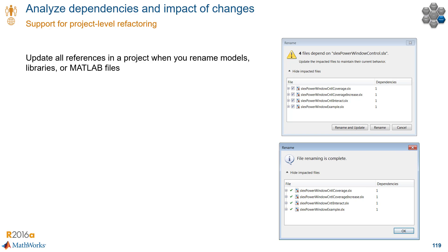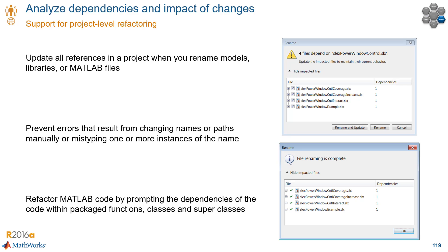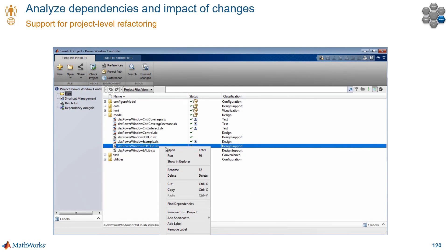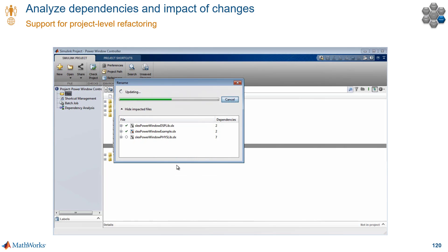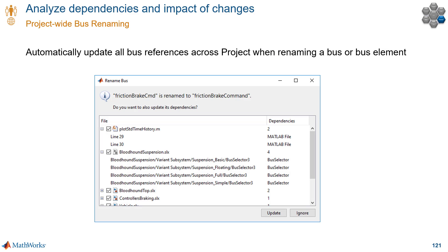The opposite would be to not use projects — then change a file without knowing you're affecting other files, and when you run something you have to manually jump between four different models to fix the issue. This gives you a way to mistake-proof the file rename process and be more efficient. This is very useful if you're working with library links, model references, subsystem references, and model callbacks. Here is that rename process in action. If I rename this file, it gives me a warning that I'm affecting other files and shows me all those dependencies. And I have the option to rename and update all of those files with just one click. Projects also help you with renaming buses and bus elements. You change the signal name in a bus and then you break 10 different models and model references. Projects let you avoid that and just do it automatically.